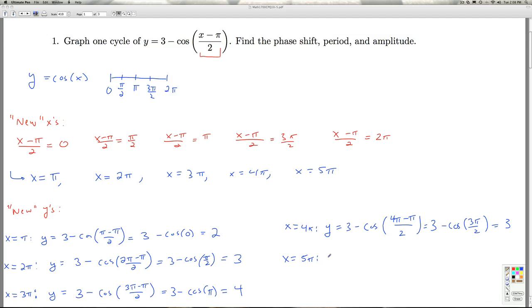And for x equals 5π, I get 3 minus the cosine of 5π minus π/2. That's 3 minus the cosine of 2π. Cosine of 2π is 1, so 3 minus 1 is 2.